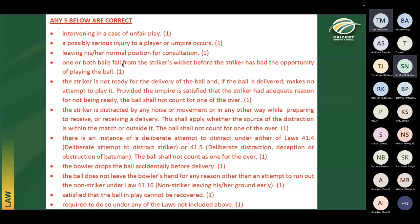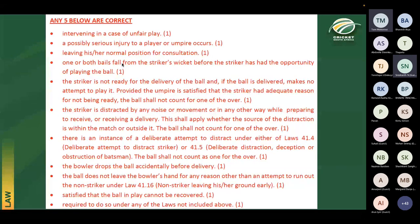The remaining instances where the umpire calls and signals dead ball include: the striker not ready and making no attempt to play the delivery; the striker distracted by noise or movement; a deliberate attempt to distract the striker; and the bowler dropping the ball accidentally before delivery — all of those balls shall not count as one for the over. The last point is if required under any other laws, which covers scenarios like a wicket keeper making significant movement before the ball is bowled.